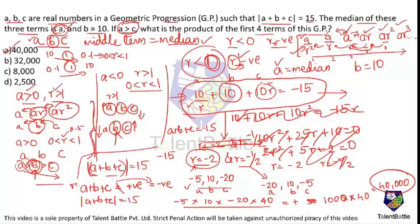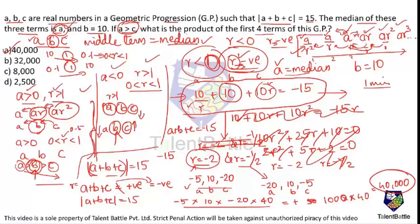The product of the first four terms (−5, 10, −20, 40) is: 5 × 20 × 10 × 40 = 40,000. The answer is option A. The key insight is understanding that r is negative because the median is A (the first term), not the middle term. Once you understand this, the sum takes only about one to two minutes to solve.